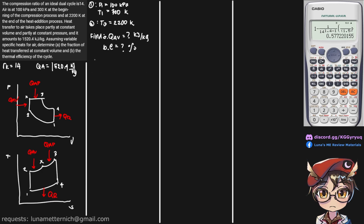To find Q_AV, it has the following formula: specific heat of air at constant volume times the temperature difference, which is Tx minus T2. Mass is assumed to be 1. The specific heat of air at constant volume is 0.718 kJ per kilogram Kelvin. We need to find Tx and T2 first.